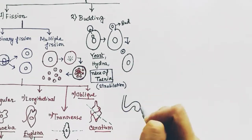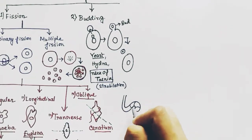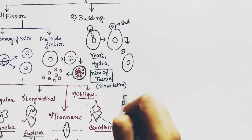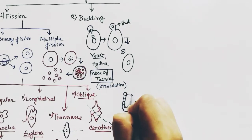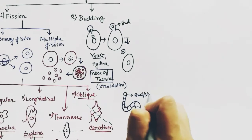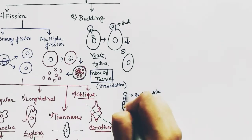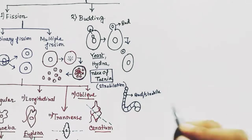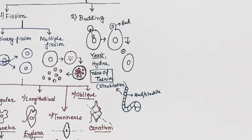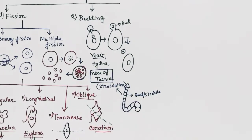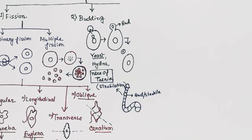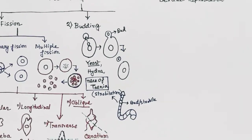A new strobila appears, and this is how a Taenia species grows in length. This is also a type of budding which is called strobilation.